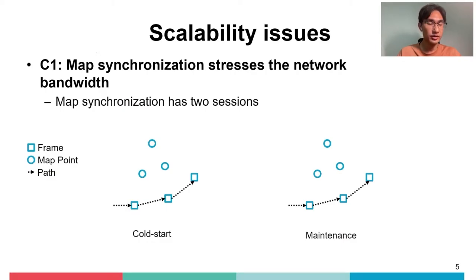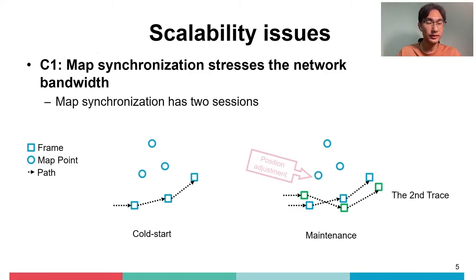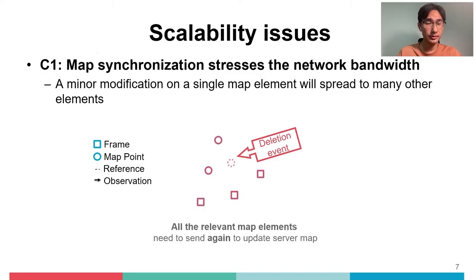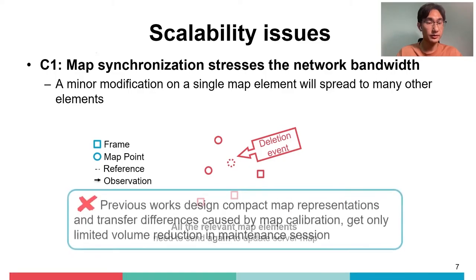The first challenge is that micro-synchronization stresses network bandwidth. The lifecycle of a collaborative visual SLAM system consists of two sessions: cold start and maintenance. In the cold start session, the agent builds a map of the entire space and transfers all local maps to the edge server. Once the global map is generated, the system enters the long-term maintenance session, during which each agent regularly revisits sites and calibrates mapping offsets or deletes outdated map points. Since map elements are tightly coupled, a minor modification on a single map element spreads to many others. For example, when deleting an outdated map point, its corresponding frames and all relevant reference map points are also modified, causing significant data transfer in the maintenance session.